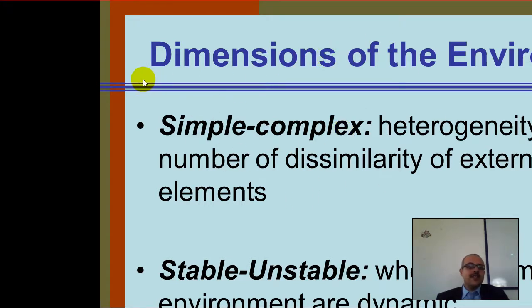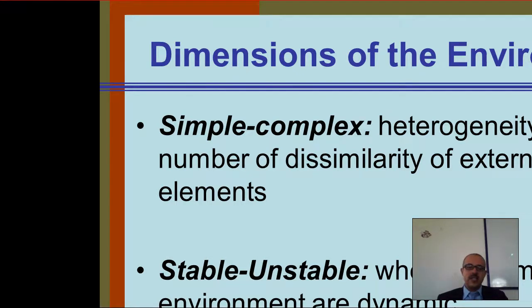Simple means everything is the same in the environment. Complex means everything is dissimilar. Let's take more examples.